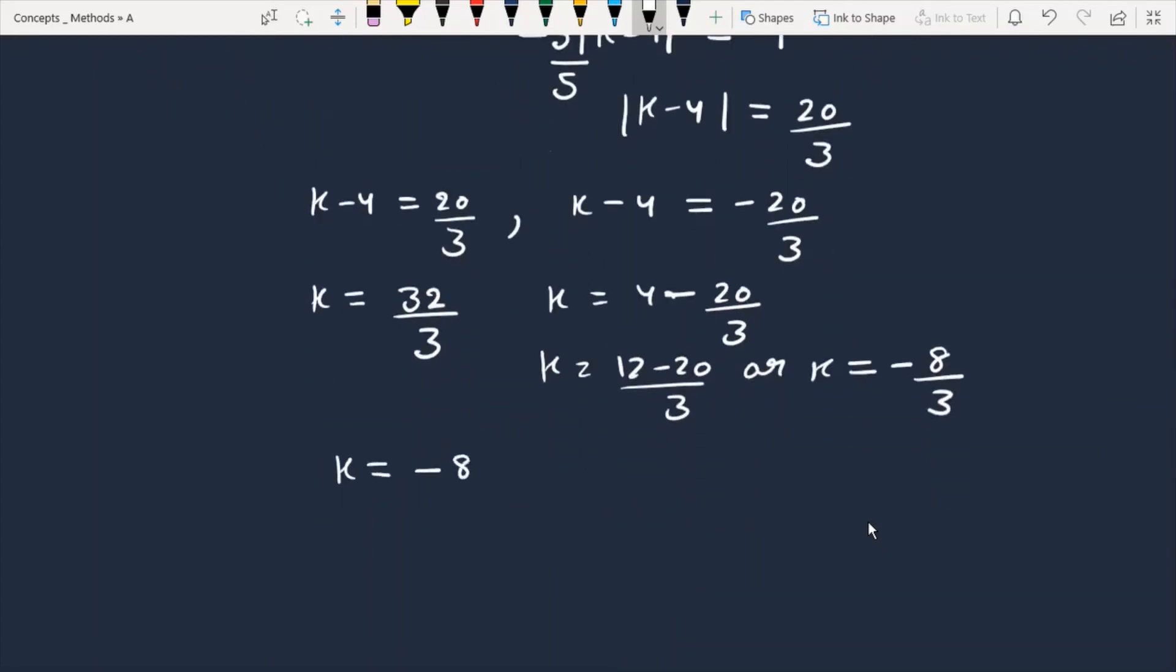And coordinate (0, -8/3), this is the first coordinate which is at the length of 4 units.